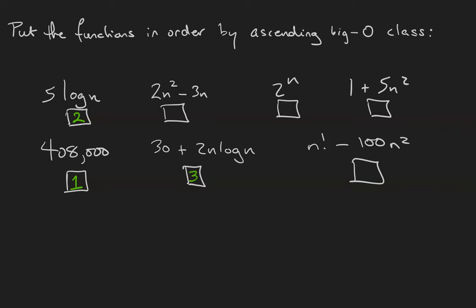Next will be the quadratic functions. Notice that we have two quadratic functions, 2n squared minus 3n and 1 plus 5n squared, and they both grow the same way. So they're both going to receive a 4. 2 to the n is the fifth fastest growing function, followed by n factorial.